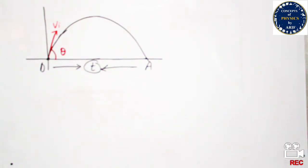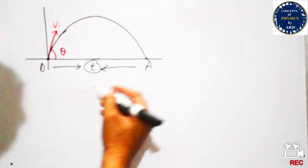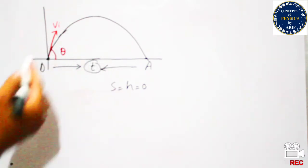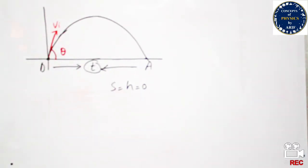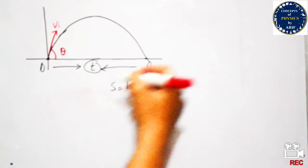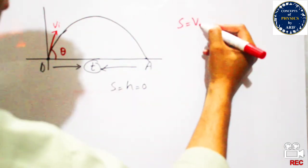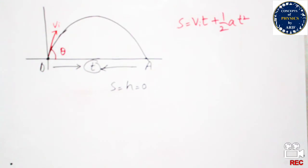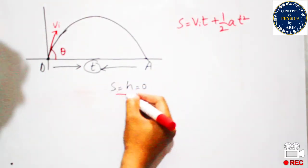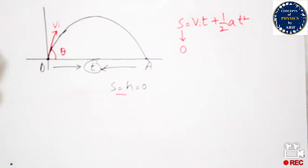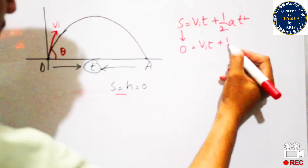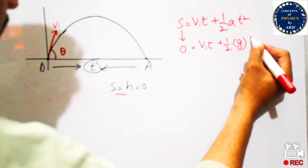In order to solve this, we need to understand that we are not considering height or distance because we only focus on time, initial velocity, and angle. To solve this, we will use the equation of motion S = Vi·t + ½·a·t². Since we are not dealing with distance, S will be 0, giving 0 = Vi·t + ½·acceleration·t².